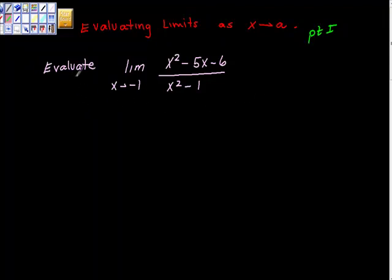So here's the first one we're going to tackle: evaluate the limit of x squared minus 5x minus 6 over x squared minus 1 as x approaches negative 1. So the first thing I'm going to try is this idea of direct substitution, and direct substitution is what it sounds like.